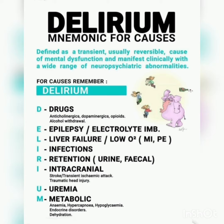The mnemonic is DELIRIUM. D is for drugs — these include anticholinergics, dopaminergics, opiates, and alcohol withdrawal. E is for epilepsy or electrolyte imbalance. L is for liver failure, that is low O2, MI, and PE.